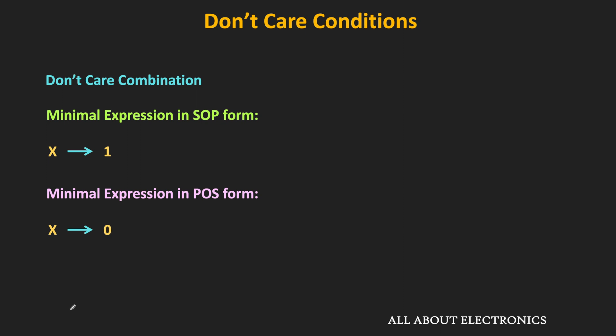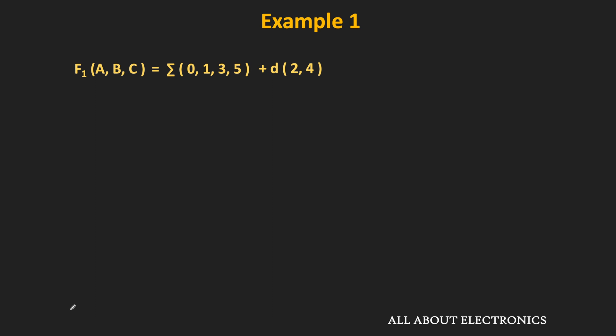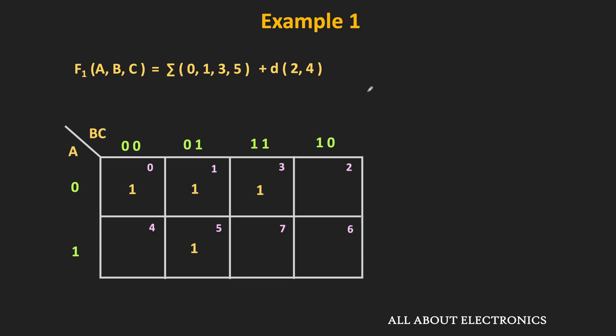Let us take a few examples so that it will get clear. So let's say function f1 is a function of three variables, and we want to find the minimal expression in the SOP form. This function is 1 for the minterms m0, m1, m3 and m5, and these two minterms are the don't cares. So first, let us represent this function in the Kmap. Minterms m0, m1, m3 and m5 are represented by 1 in the Kmap, while these two don't care minterms are represented with x.